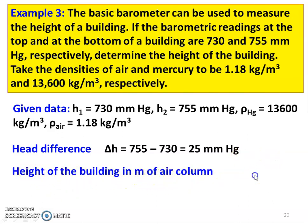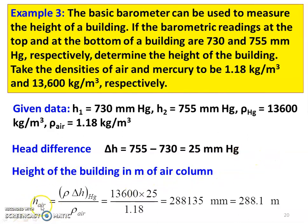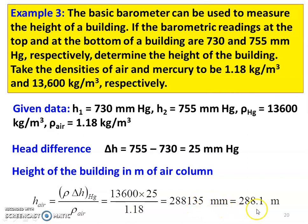Height of the building in meter of air column: height = rho_mercury × delta H_mercury divided by density of air = 13,600 × 25 divided by 1.18 = 288,135 mm = 288.1 meter. So the height of the building is 288.1 meter.